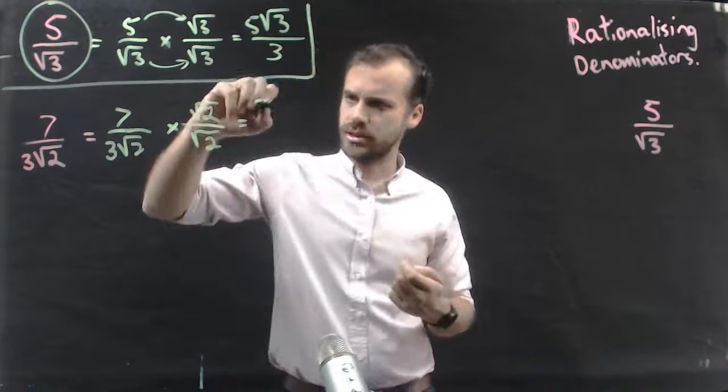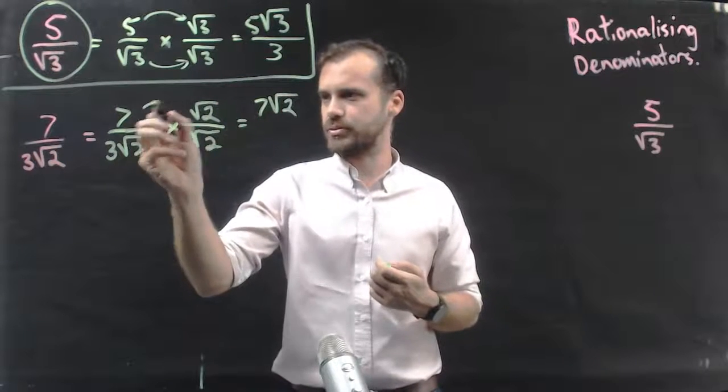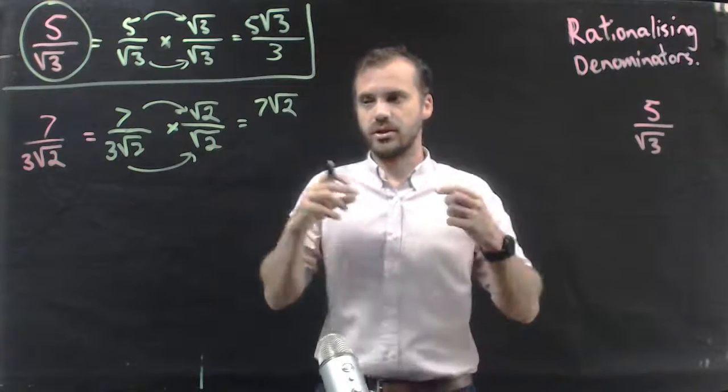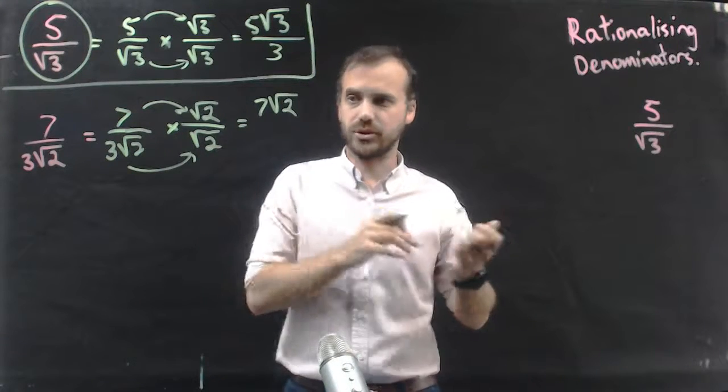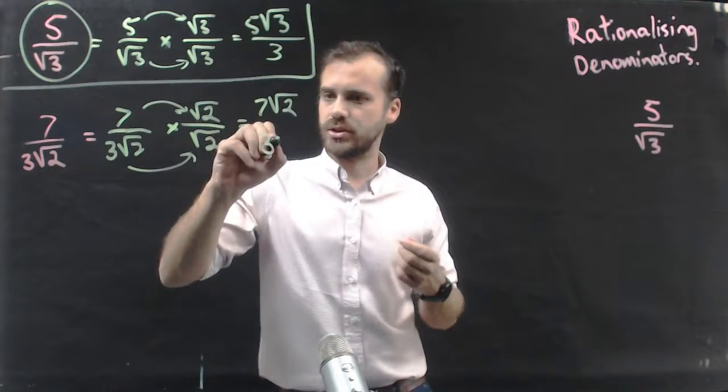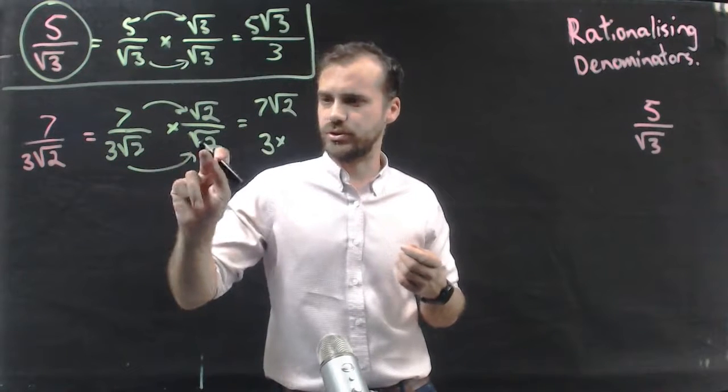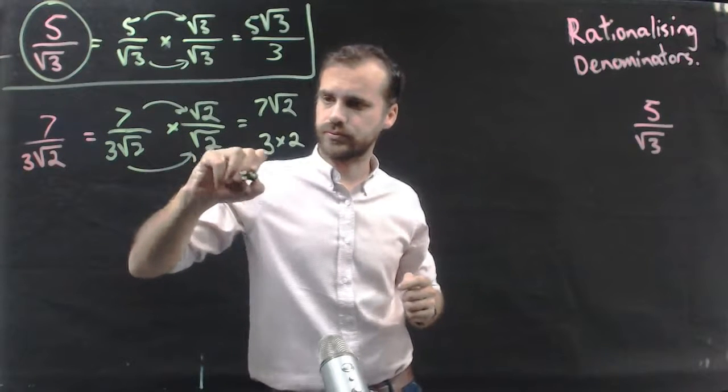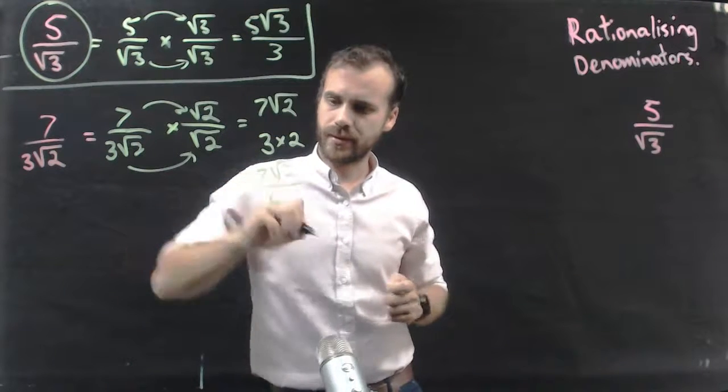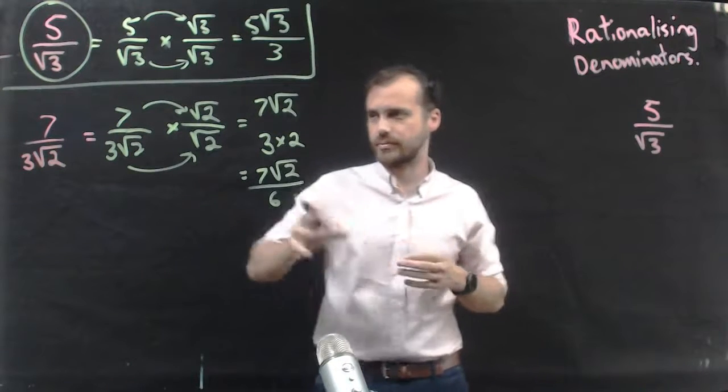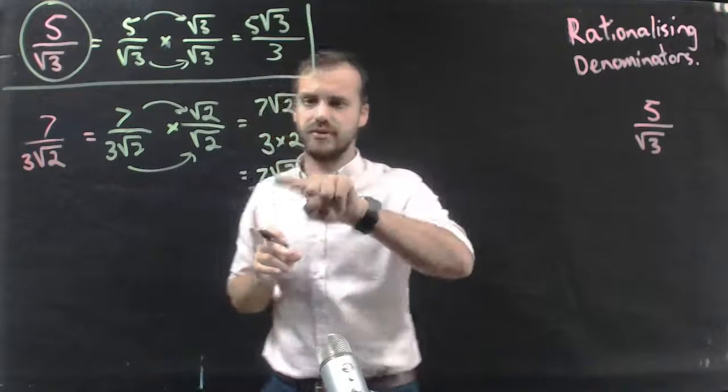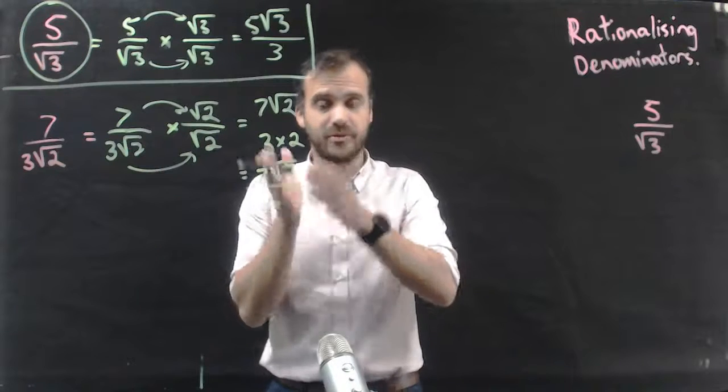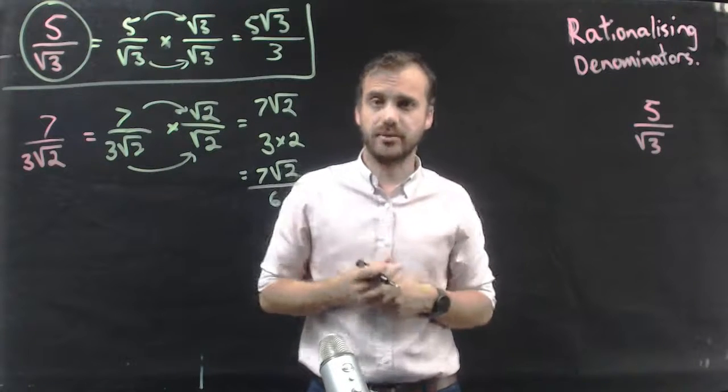So that's going to be 7 root 2, 7 times root 2, and it's going to be 3 times root 2 times root 2. That's going to be 3 times root 2 times root 2 is going to be 2. Again, results are the same. So 7 on 3 root 2 is the same as 7 root 2 on 6, because we only multiplied it by 1, but it has a rational denominator now, which is polite mathematics.